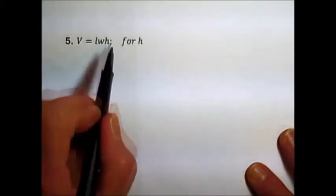This next example comes from geometry. This is the formula for the volume of a rectangular solid, where you take the length times the width times the height.